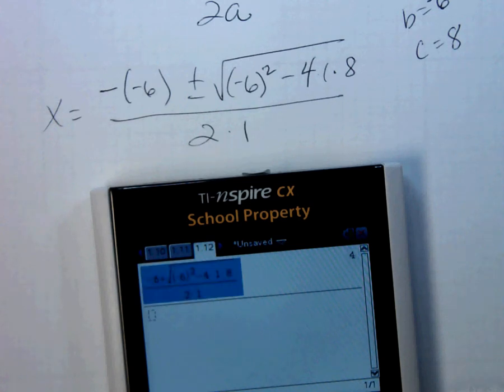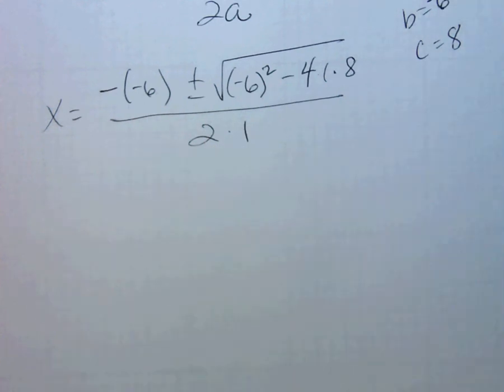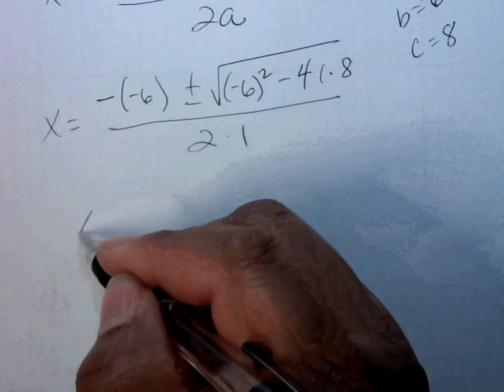I go back up and highlight it, bring it down, and change that to a minus sign, and I get 2. So these two are correct, and I use the quadratic formula to check it. By hand,